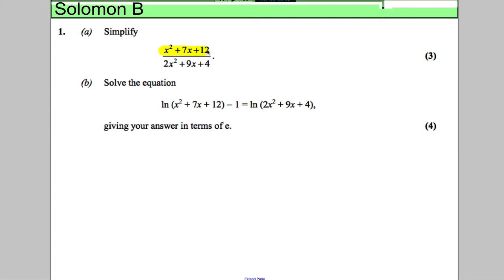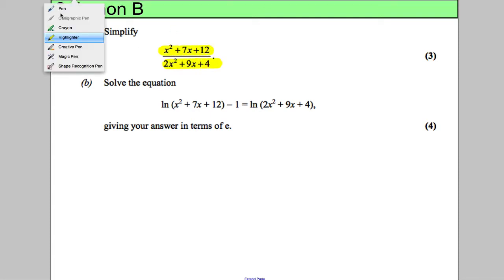To simplify the following, we're going to factorize the numerator and denominator and look for common factors we can divide top and bottom by. The top clearly factorizes to x times 3x add 4.